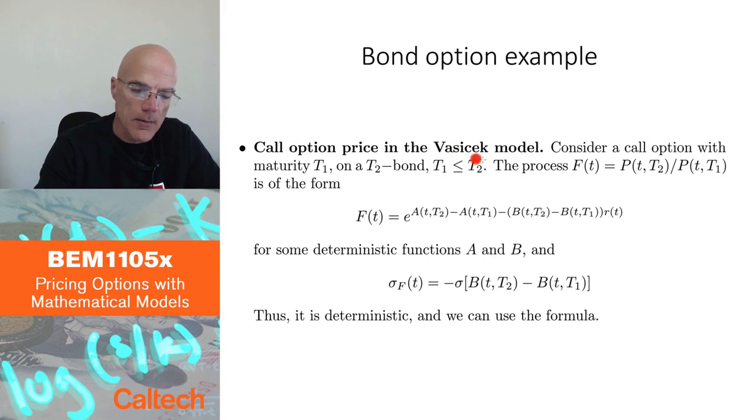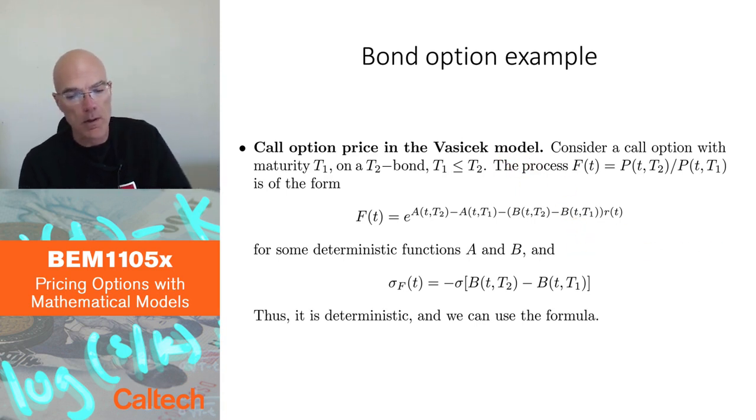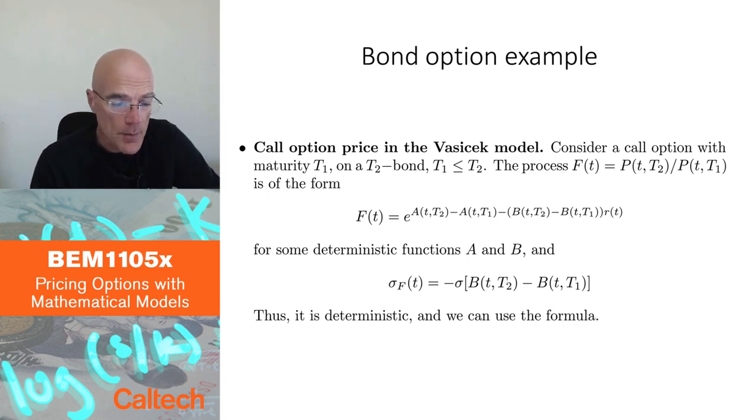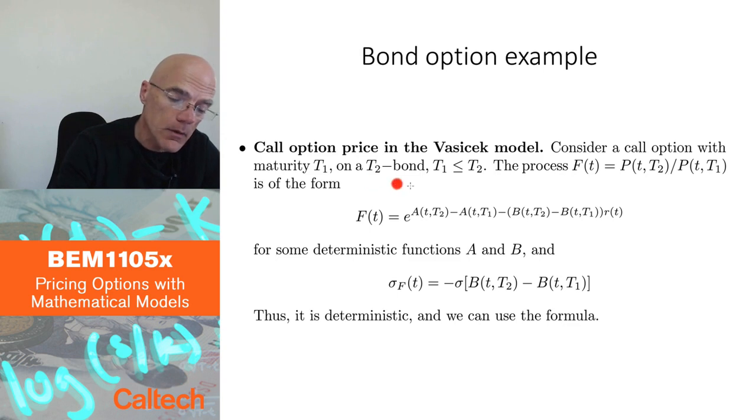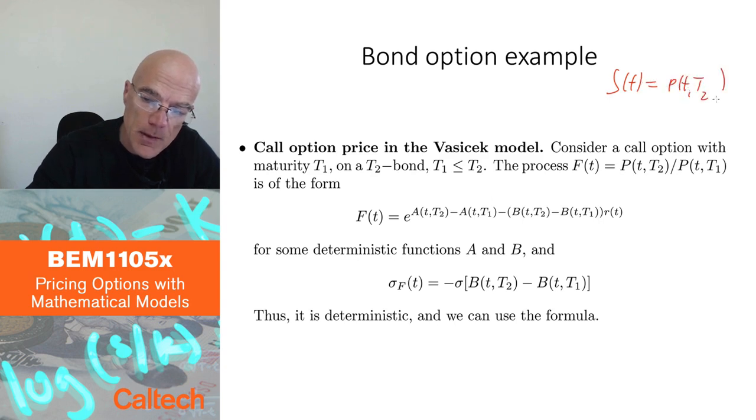I'm saying that this is in the Vasicek model, but actually it's really in any affine model. You will see that the argument doesn't really rely on having a Vasicek model. It's any affine model that we talked about. So consider a call option on a T2 bond. So the option is written on a T2 bond. So what I called S in the previous slide, S of T becomes P of T T2. I'm going to write the call option on the T2 bond, the bond with maturity T2. And the option itself is going to mature at time T1, which is less than T2.